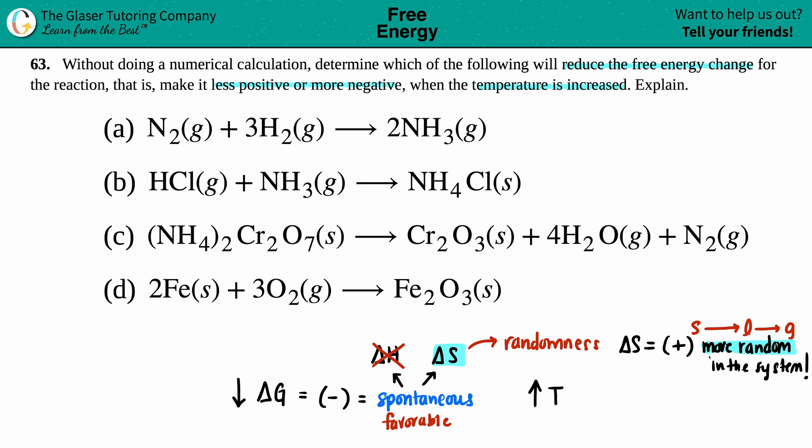So all we have to do is just see which one is going to be more random. Now I'm looking at letter A, and I see that there are gases all across the board: gas, gas, and gas. So there's no change in state from solid to liquid to gas, so I can't go about that. But the second thing for gaining entropy is that the more molecules, the more random.